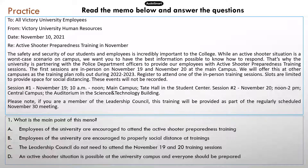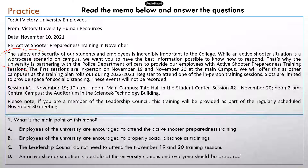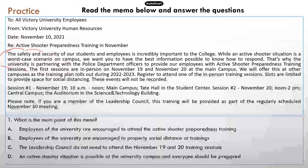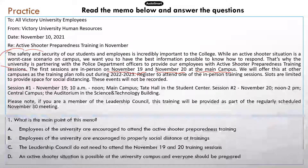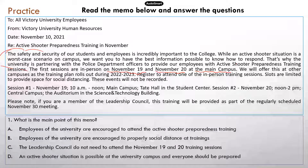Now let's look at the questions. This public announcement is about the active shooter preparedness training, for all Victory University employees. The first part is really just about why we're doing this training session. The second part has some details about the training session — like the first sessions are going to be in person on November 19th and November 20th, and the location is going to be the main campus. When you read this, you can probably infer that this university may have multiple campuses, which is why the announcement specifically says the first in-person sessions are going to be on the main campus.